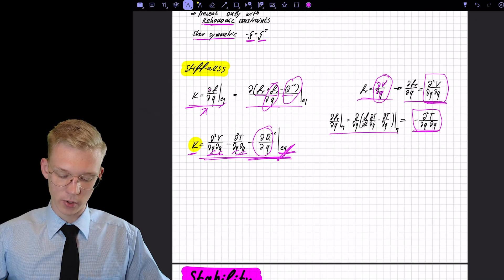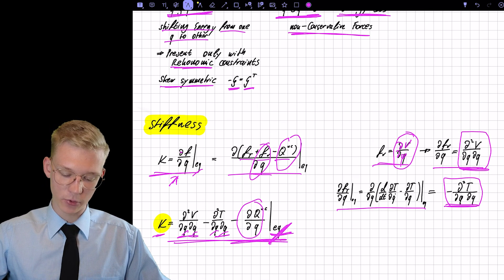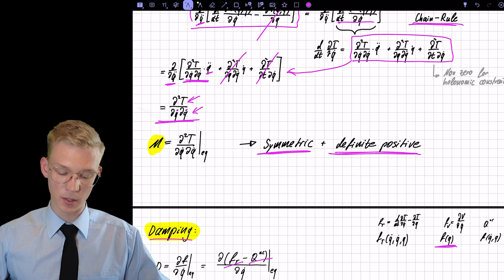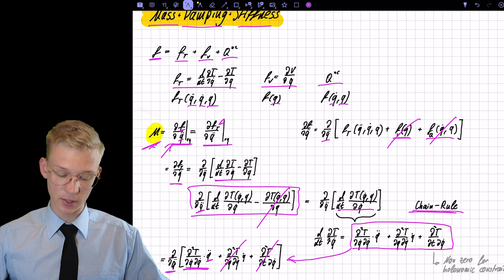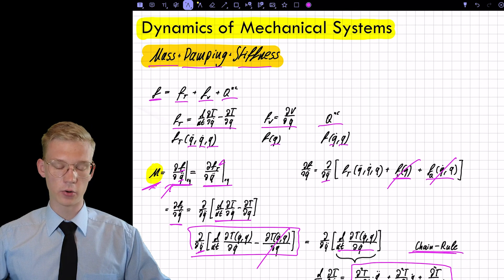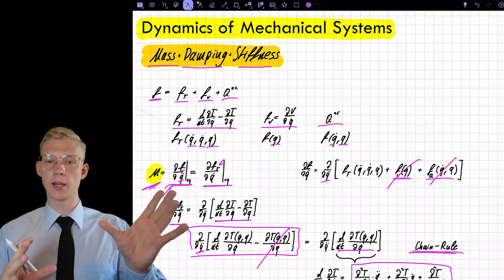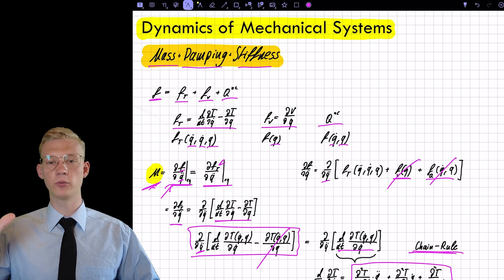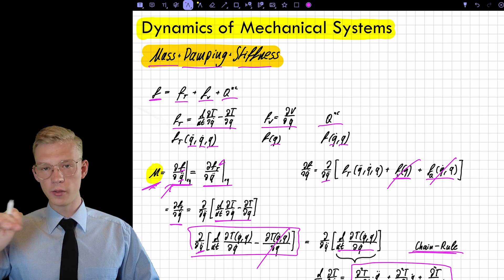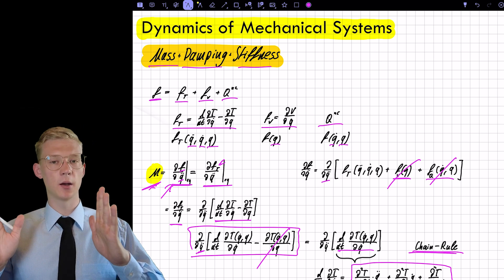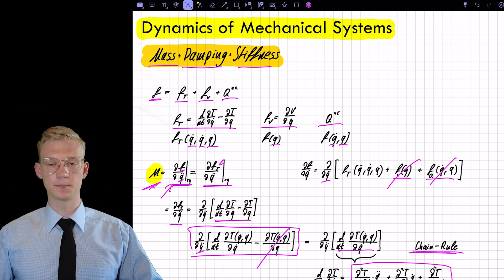So this is how you can get the mass, damping, and stiffness matrix if you already know the kinetic energy, the potential energy, and the non-conservative forces. You don't have to derive all the equations of motion — you actually just need parts of them.